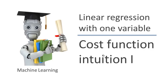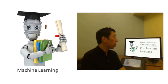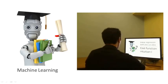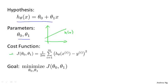In the previous video, we gave a mathematical definition of the cost function. In this video, let's look at some examples to get better intuition about what the cost function is doing and why we want to use it. To recap, we want to fit a straight line to our data. We had this form of the hypothesis with parameters theta zero and theta one, and with different choices of the parameters, we end up with different straight line fits to the data. And there's a cost function — that was our optimization objective.